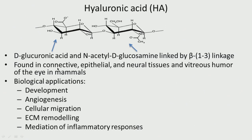Hyaluronic acid is interestingly found in connective tissues, epithelial tissue, and the vitreous humor of the eye in mammals. It gives some sort of lubrication and is found in the eyes. Its biological applications include development, angiogenesis, cellular migration, extracellular matrix remodeling, and mediation of inflammatory response. Hyaluronic acid is found in the human body and has many requirements. It is also widely used as a biomaterial, but production from bacteria is very low.